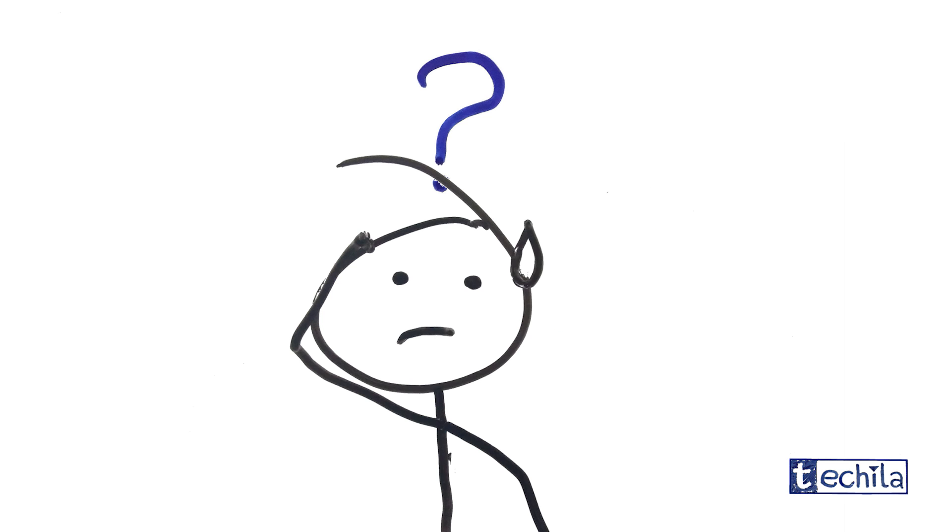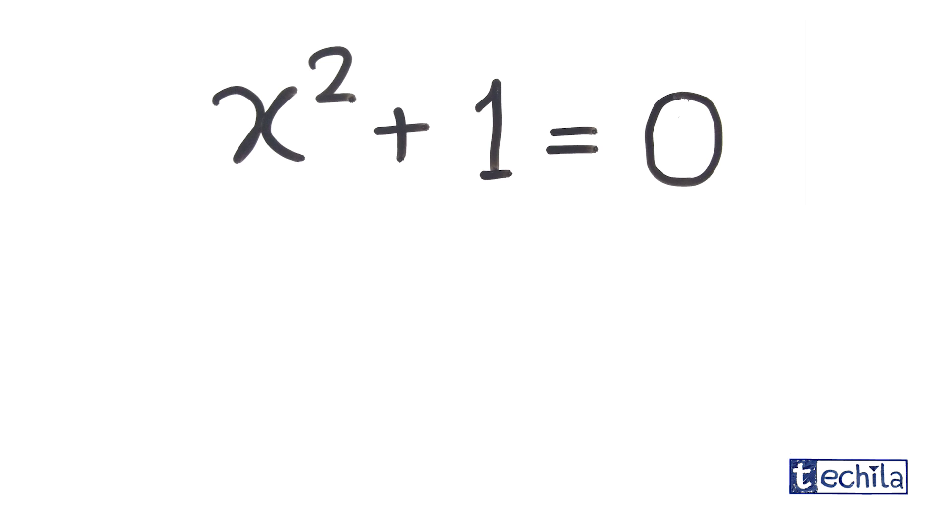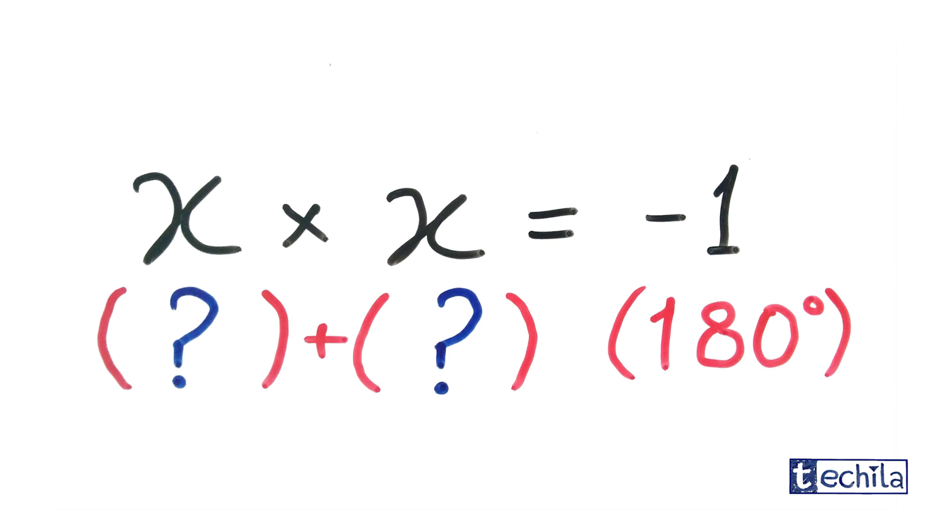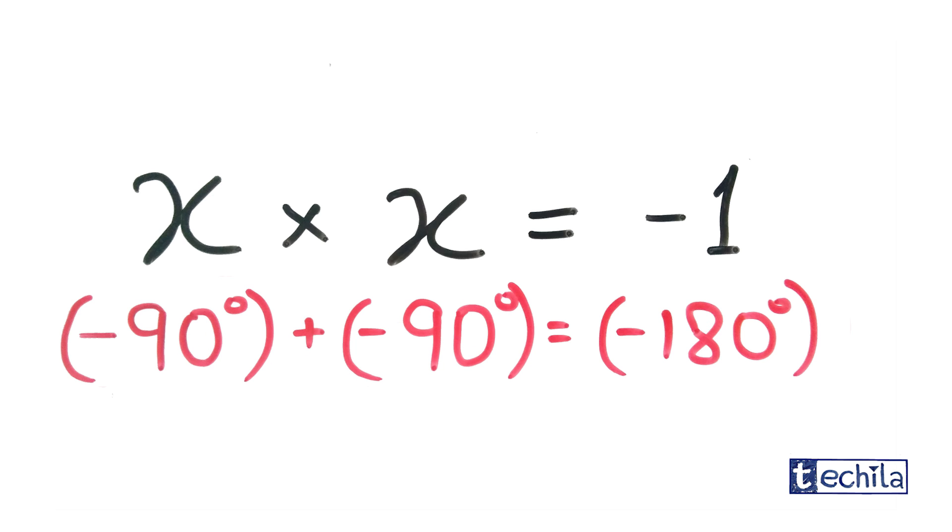So, what's happening here? For the solution of the above equation to exist, we need a number that generates a phase shift of 180 degrees when it is multiplied twice with itself. Such a number can only exist if its own phase shift is either 90 degrees or minus 90 degrees.